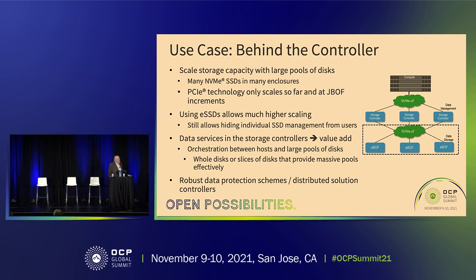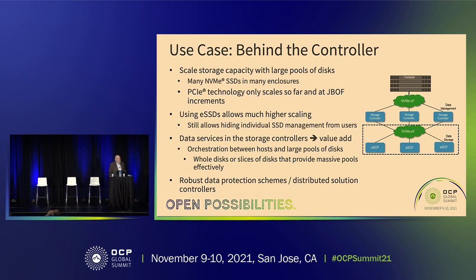One use case is where you still have a controller, but now instead of translating from NVMe OF to PCIe, it's NVMe OF to NVMe OF — no translation, no store and forward. You may do other data services up in that controller, but the real advantage of using Ethernet drives on the back end is that you can scale much farther than you can with a PCIe fabric. You can scale up to a rack of trays of Ethernet drives without touching PCIe at all. You can also mix and match different Ethernet speeds as you grow your rack — start with 25-gig Ethernet drives, add more at 50-gig, and it all continues to work seamlessly.